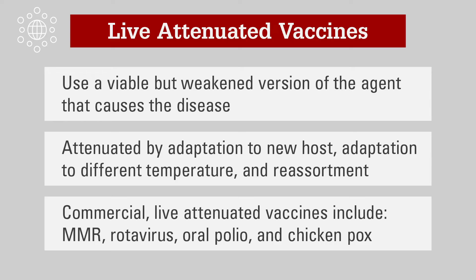Live attenuated vaccines use a viable — or alive but weakened — version of the agent that causes the disease, a viral particle in most cases. The agent is weakened by adapting it to a different set of conditions from those found naturally in the population, such as a new host or a new growing temperature. Adapting the agent to grow in a new set of conditions makes it safer as a vaccine candidate, as it is less likely to cause disease upon administration.